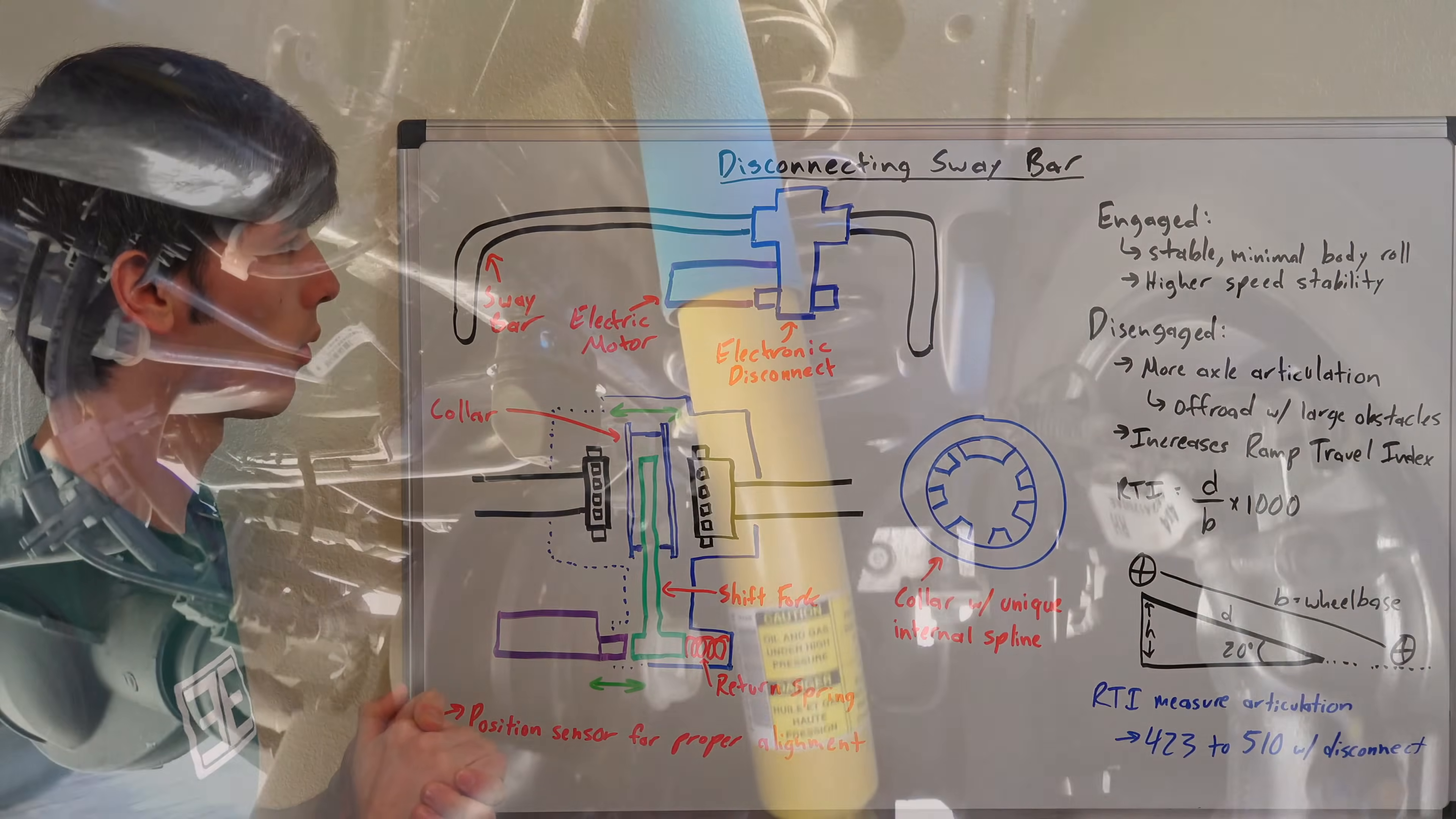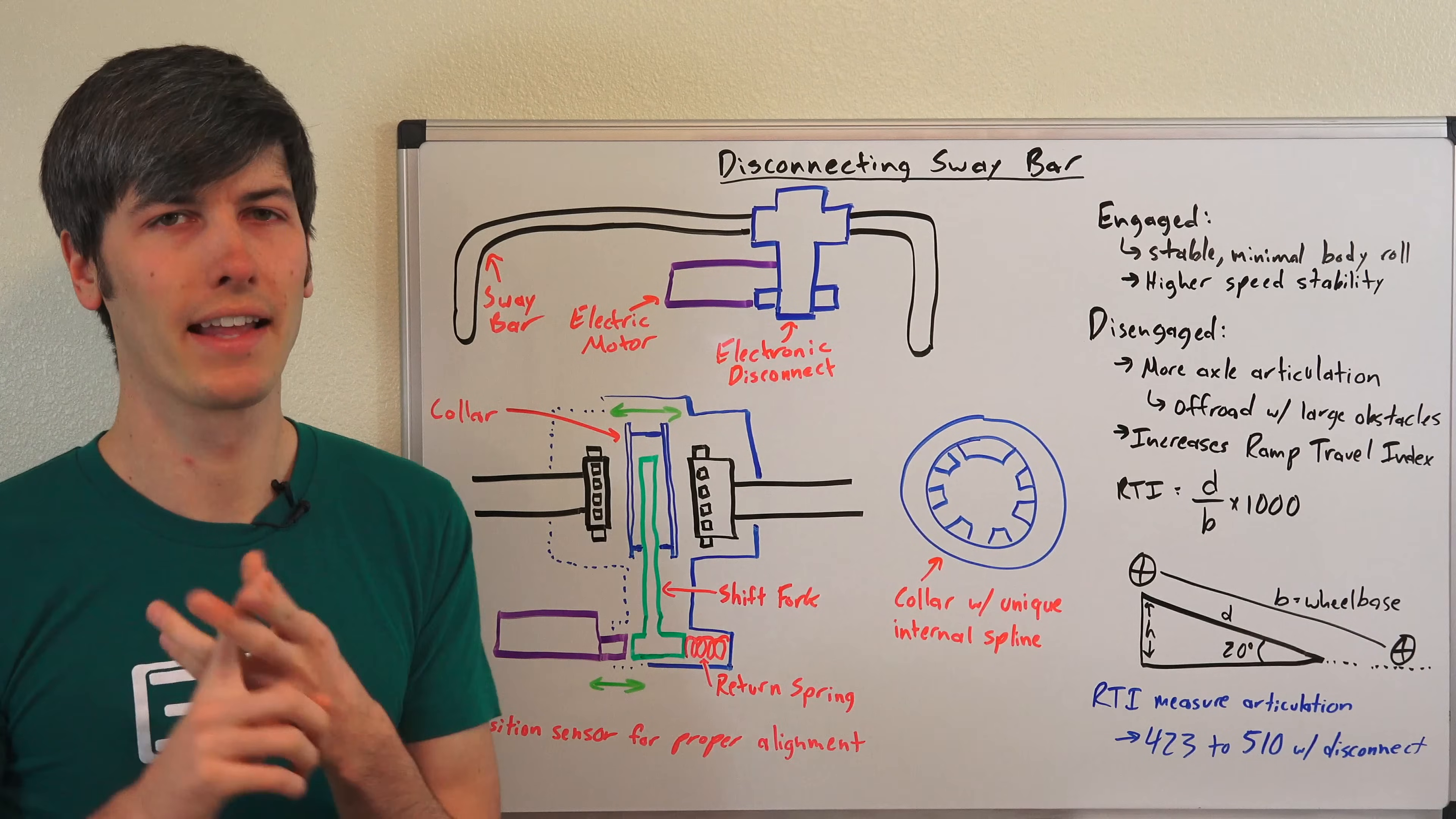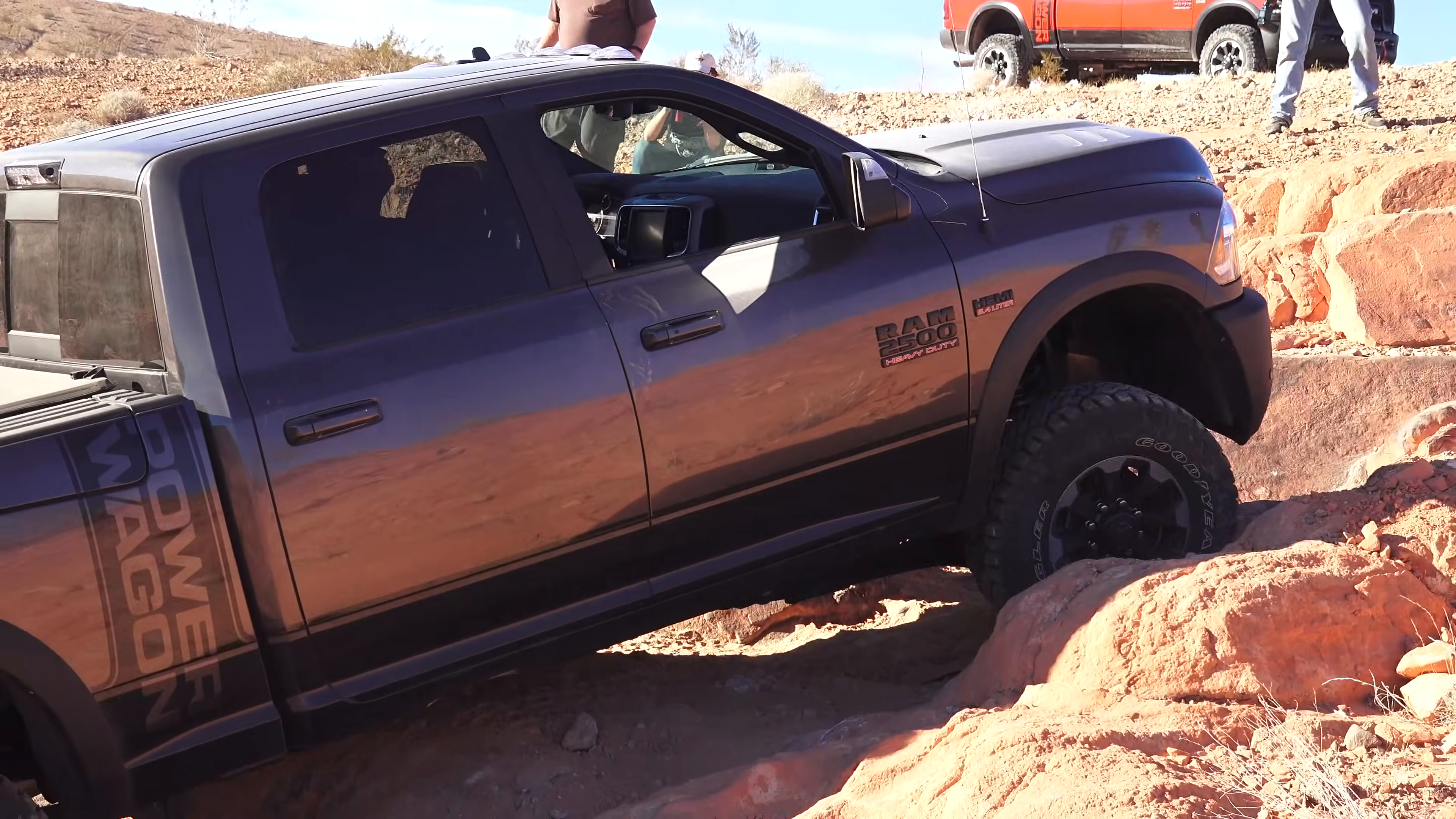So when would you want to have that roll bar engaged? Well, basically you want the roll bar engaged for stability, especially for high-speed stability. And this is going to prevent body roll.